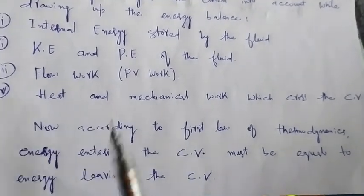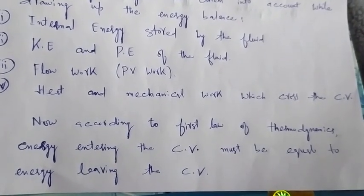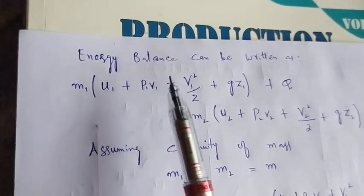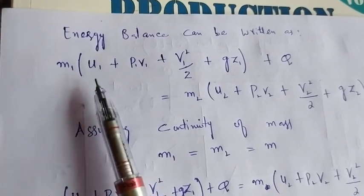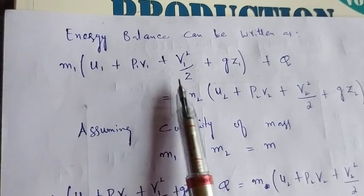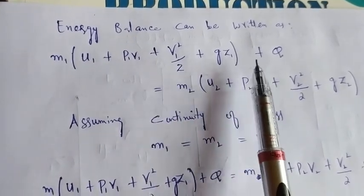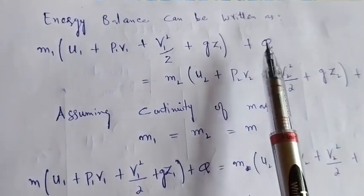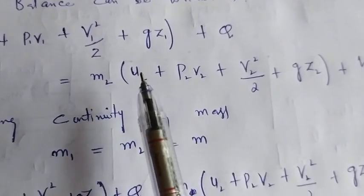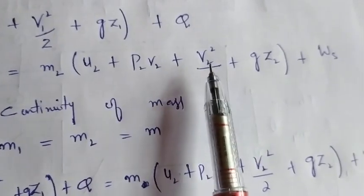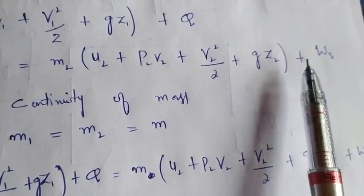According to the first law of thermodynamics, energy entering the control volume must equal energy leaving the control volume. The energy balance is written as: M1·(U1 + P1·V1 + V1²/2 + g·Z1) + Q = M2·(U2 + P2·V2 + V2²/2 + g·Z2) + WS. Here U1 and U2 are internal energies, P1·V1 and P2·V2 are flow works at inlet and outlet, V1²/2 and V2²/2 are kinetic energies, g·Z1 and g·Z2 are potential energies, and WS is shaft work or mechanical work done on the system.